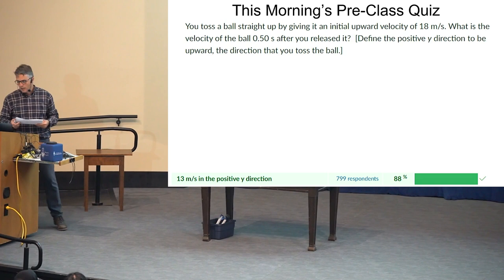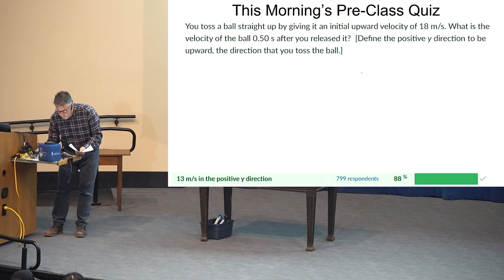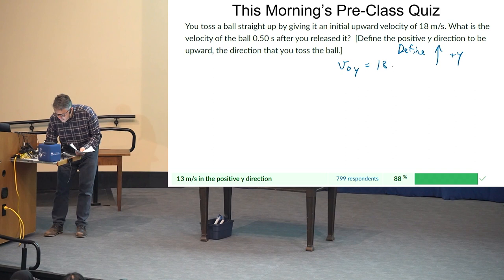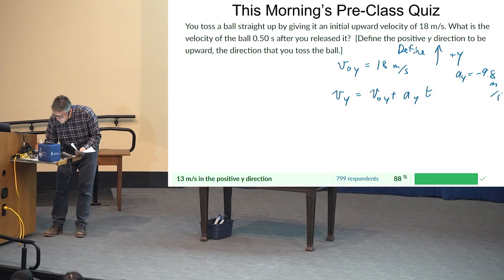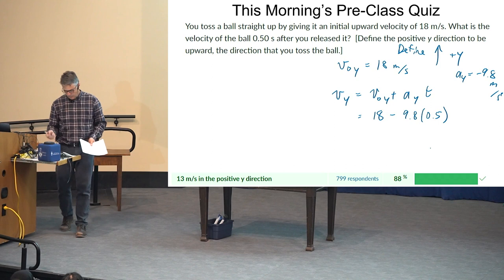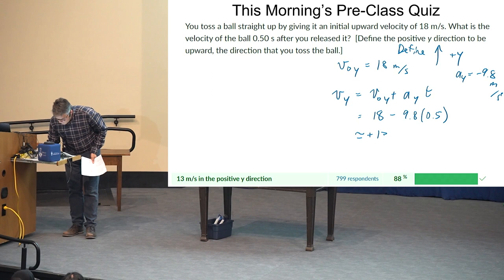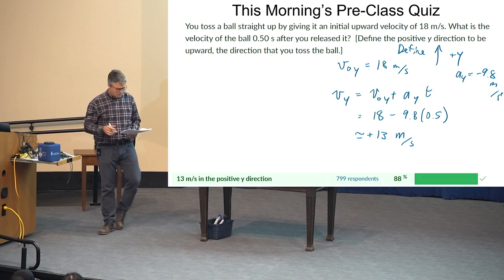And then this, you toss the ball straight up, giving it initial upward velocity of 18 meters per second. What's the velocity of the ball 0.5 seconds after you release it? So I would say that V initial Y is 18. So I would define up to be plus Y meters per second. And then you're asked, I think VY is just going to be equal to V initial Y plus A sub Y times T. So A sub Y is negative 9.8 meters per second squared. It's a free fall question. So I just got 18 minus 9.8 times 0.5. So we'll try those out. 18 minus 4.9 is going to be about plus 13 meters per second. So it's in the plus Y direction. That's it.